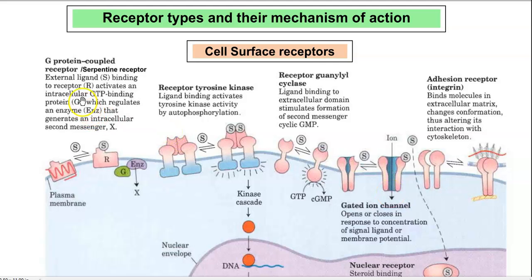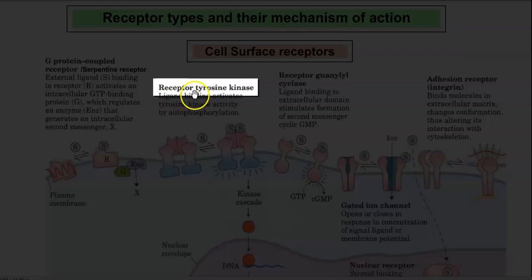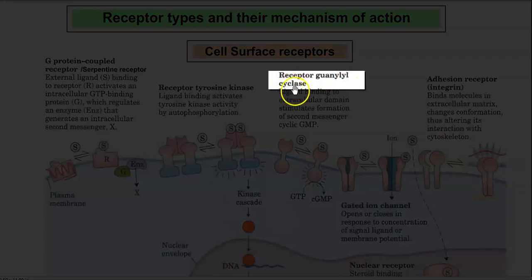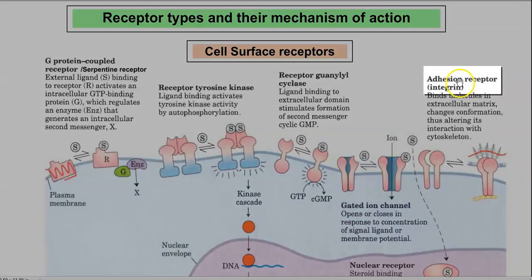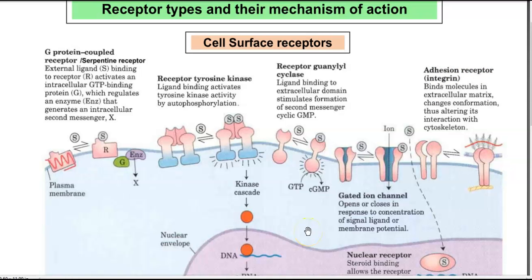Five kinds of cell surface receptors are present in living organisms. These include: G-protein coupled receptor, which is also called a serpentine receptor; receptor tyrosine kinase; receptor guanylyl cyclase; gated ion channel; and adhesion receptor. Now we will look into the explanation of each of these cell surface receptors.